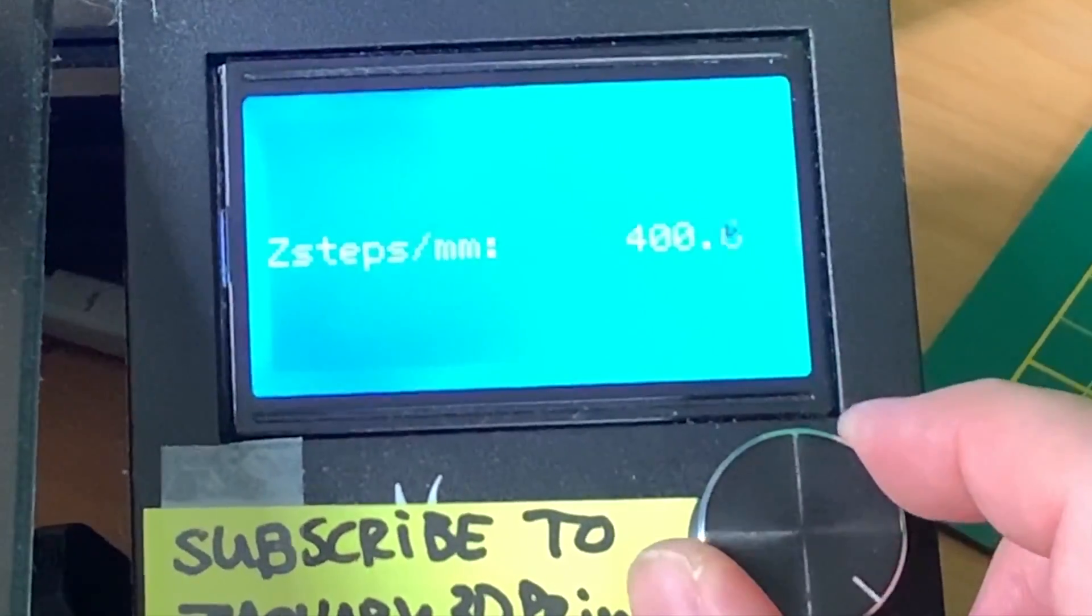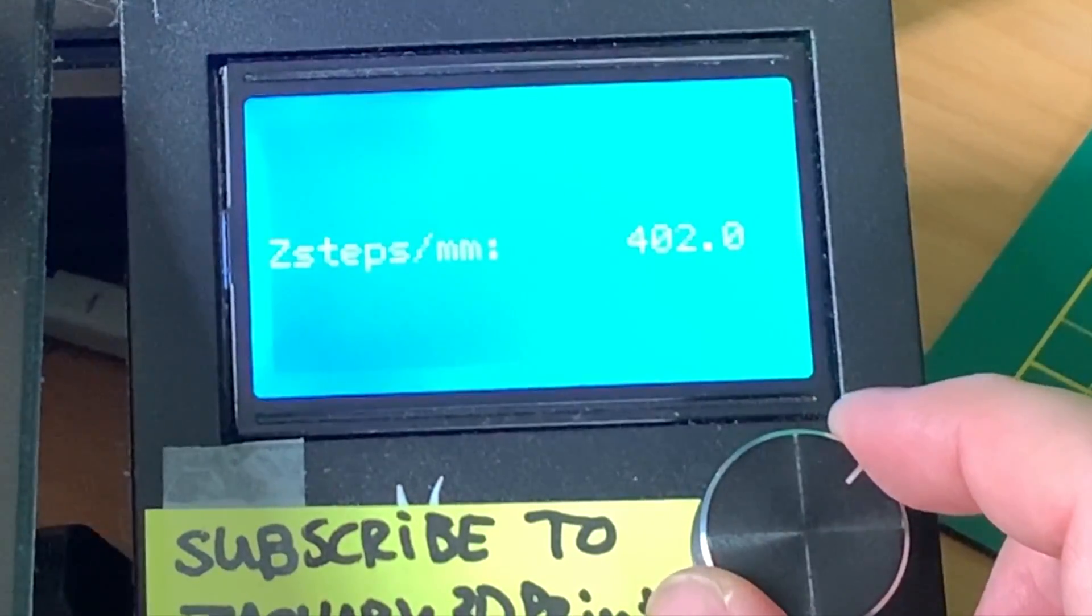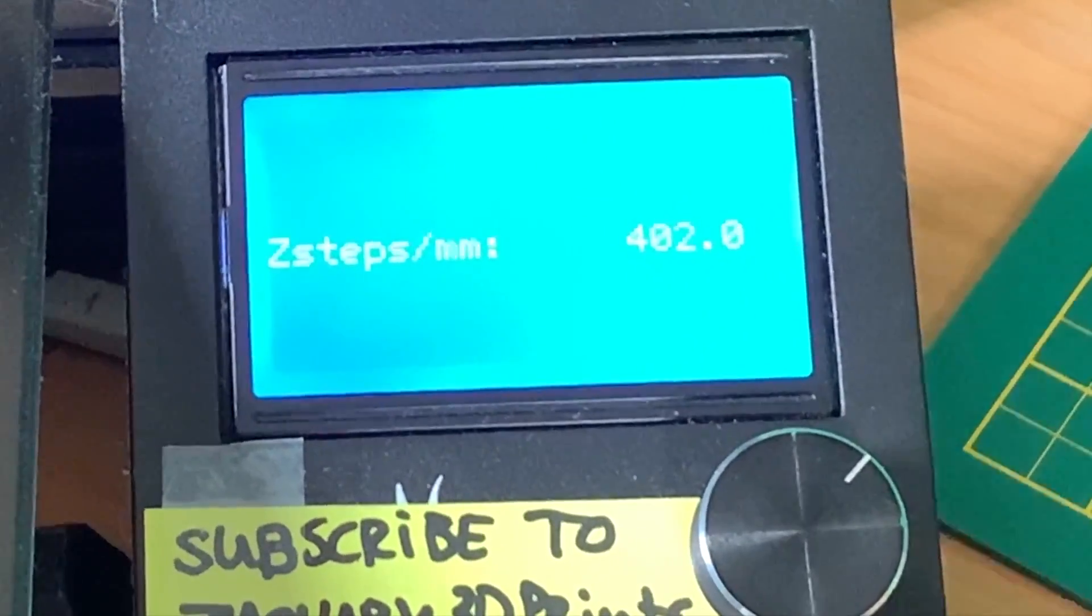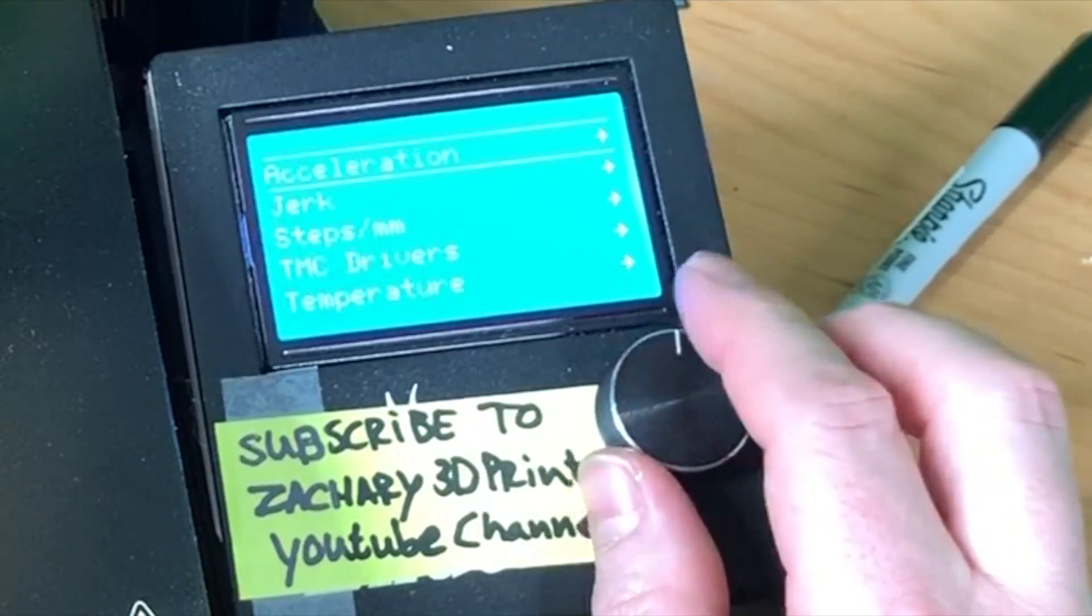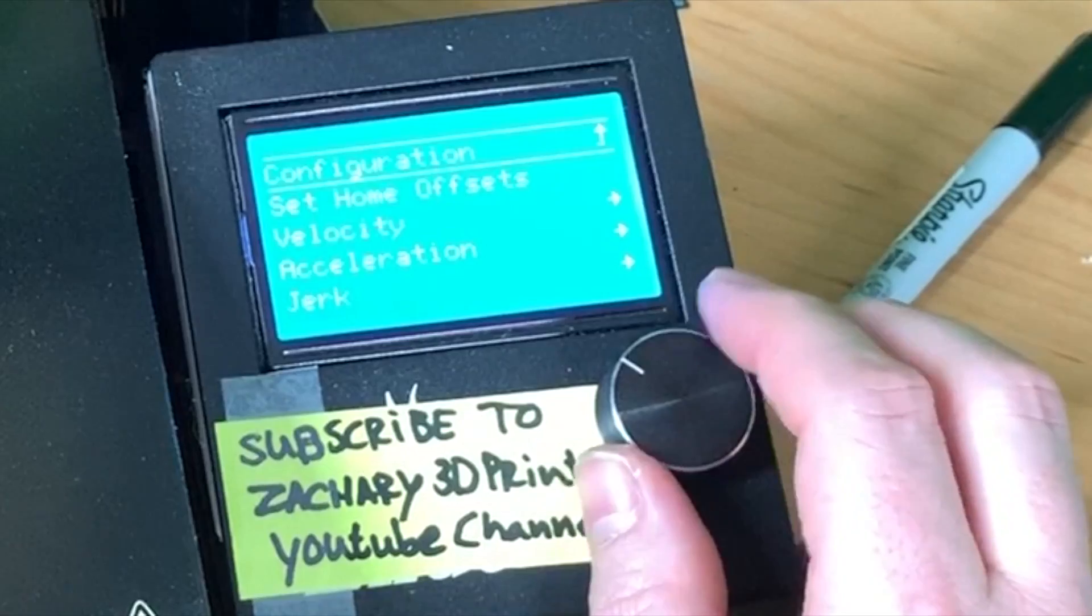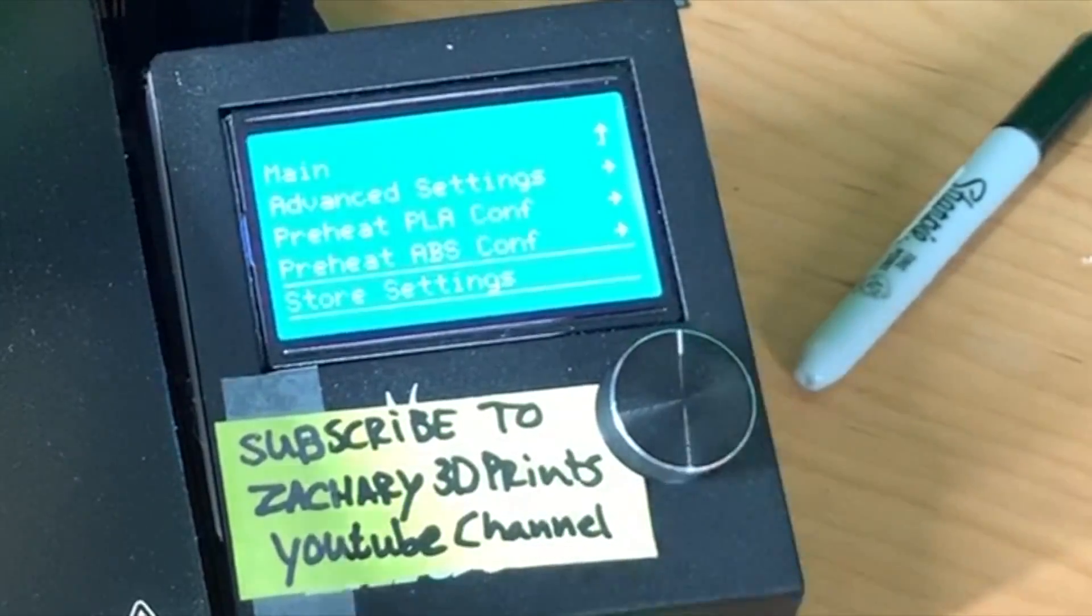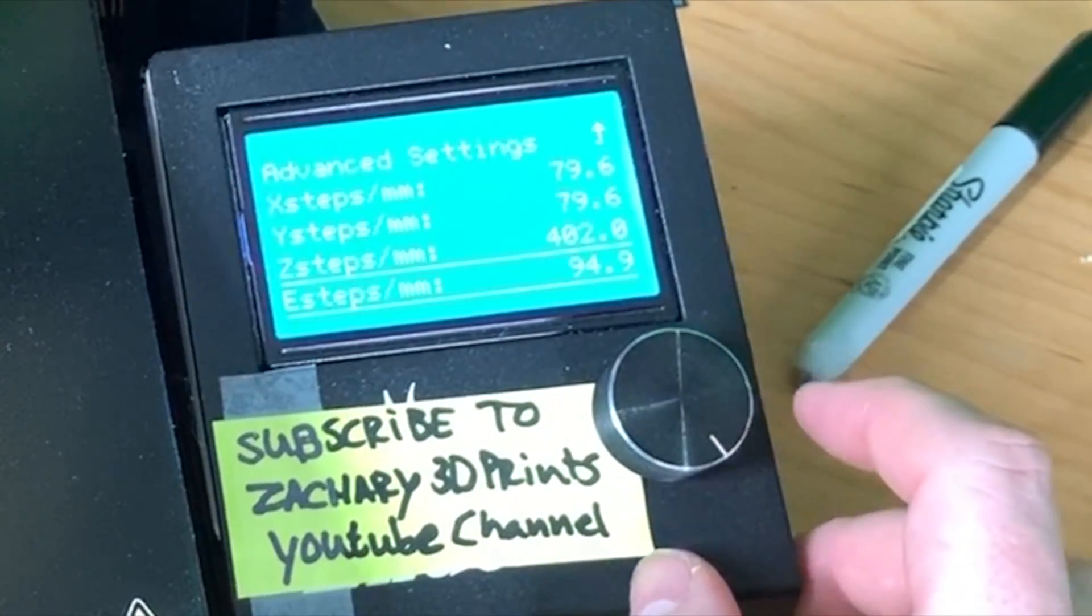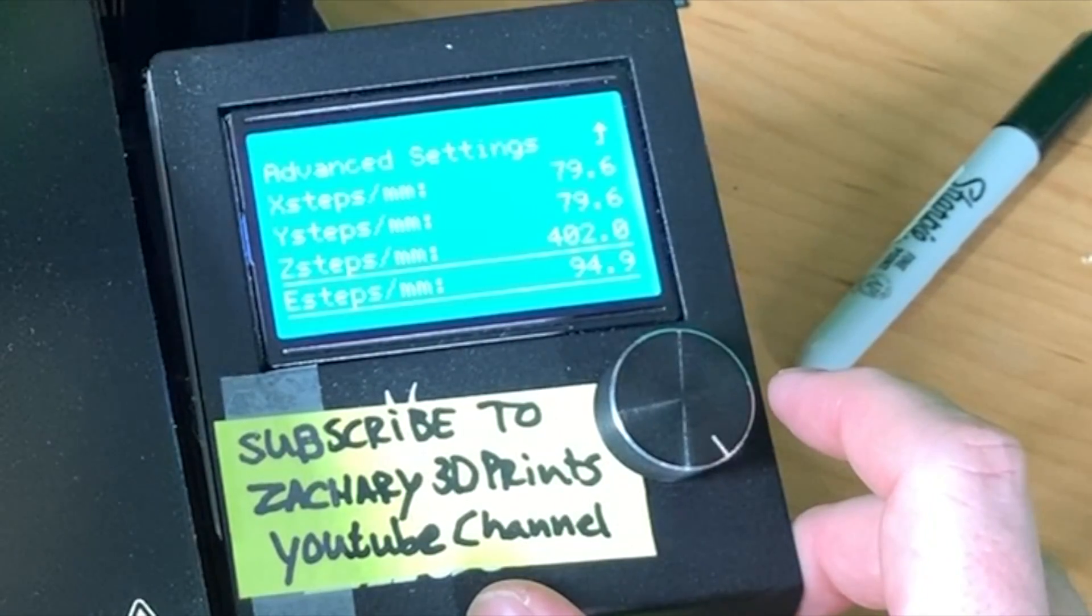There, because it's just one digit behind the dot, we leave it as it is now. And we go another step back and we say Store Settings. Now we get a beep which says that everything should be set. We are going to print a calibration cube again and let's see how the measurements are now.